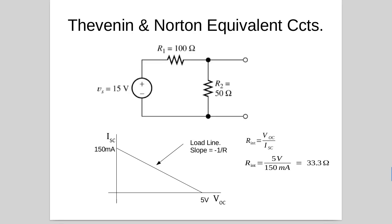Regarding the load line: regardless of what resistance is connected as a load, the voltage across and current through that load will intersect on the load line. For example, at 75 milliamps we intersect at 2.5 volts, and at 100 milliamps we'd hit the line at approximately 1.67 volts. When the load is exactly 33.3 ohms, that point gives the maximum power transfer.